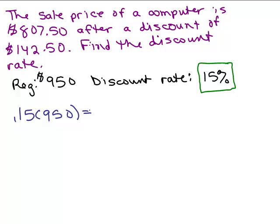You could do this by first figuring out what 10% is and then 5% and adding them together. Or you could just get out your calculator and do 0.15 times 950 and you're going to get $142.50, which is exactly what it told us. The discount was supposed to be $142.50.